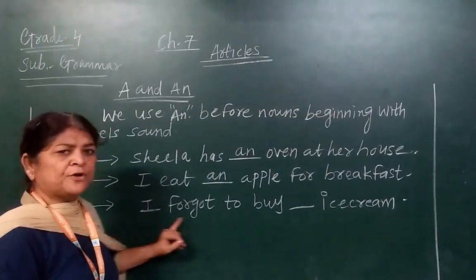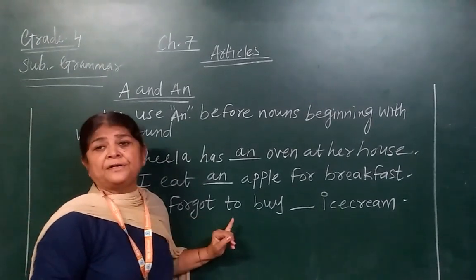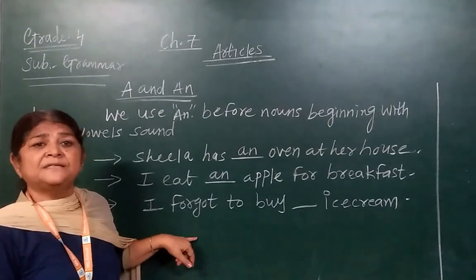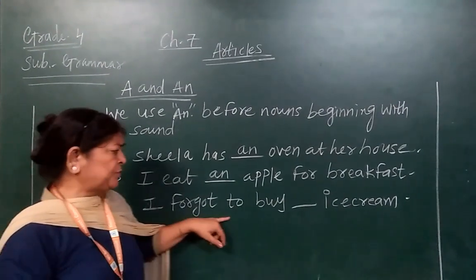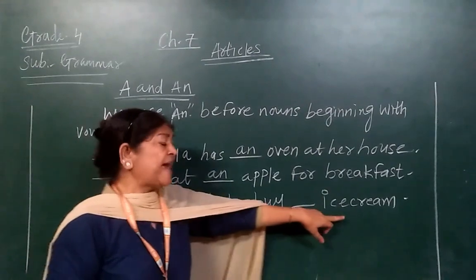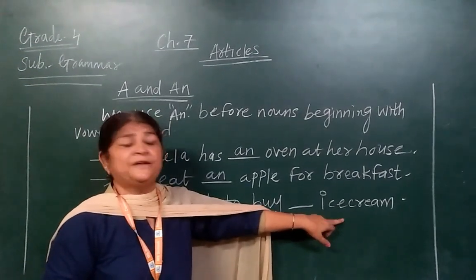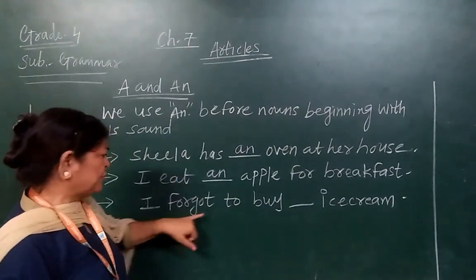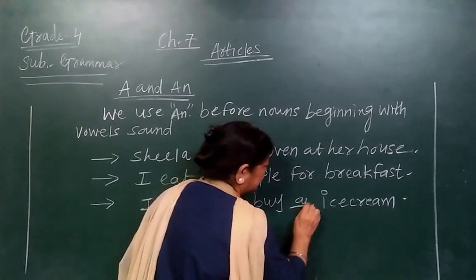Number three: I forgot to buy an ice cream. 'Forgot' means to forget something. Ice cream is also a thing — a noun. The word 'ice' starts with a vowel sound I, so we write An — I forgot to buy an ice cream.